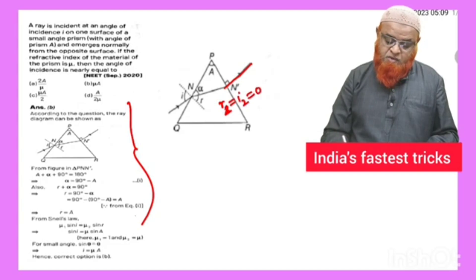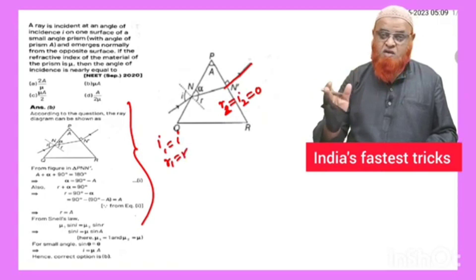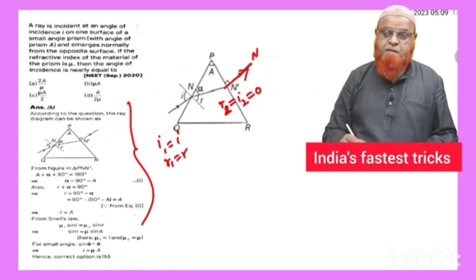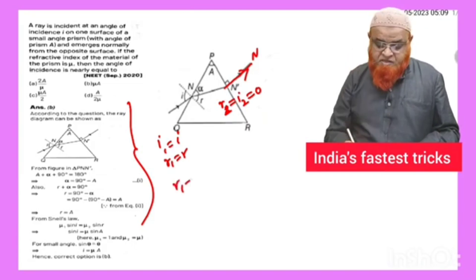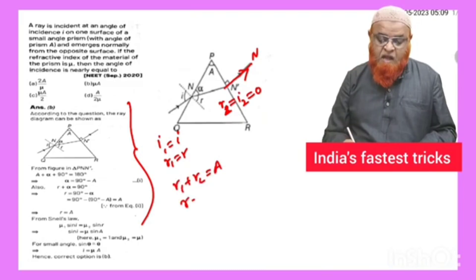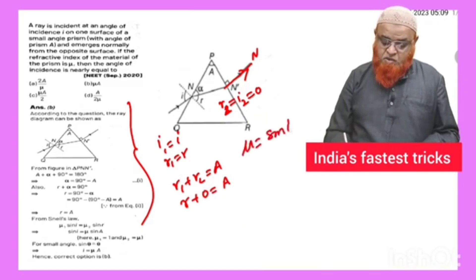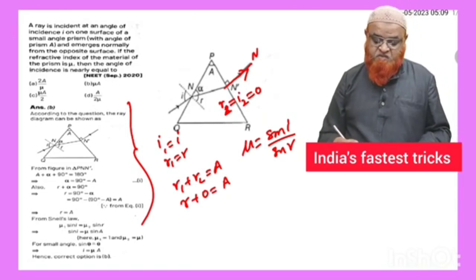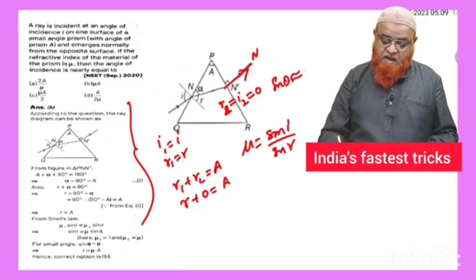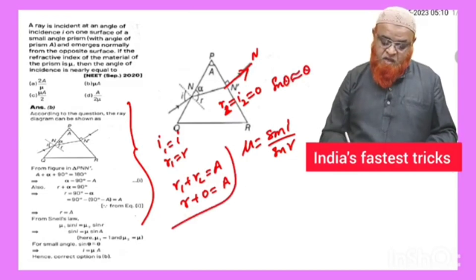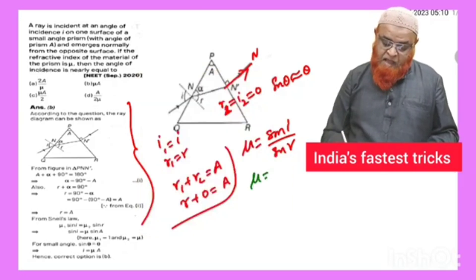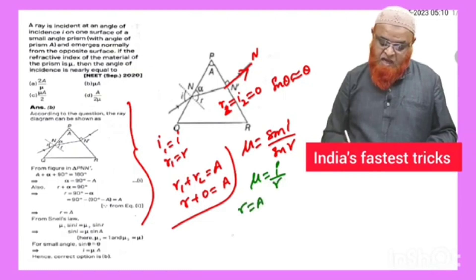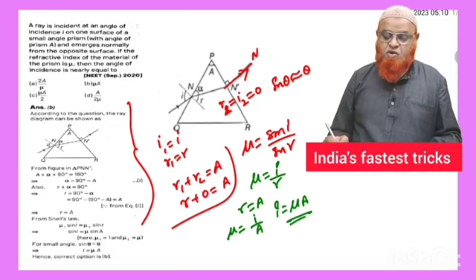R2 = I2 = 0, because the ray is going in the normal direction. So I1 = I and R1 = R, while I2 = R2 = 0. Using the prism identity R1 + R2 = A, we get R = A. Since mu = sin(I)/sin(R), and for small angles sin(θ) ≈ θ, we write mu = I/R. Since R = A, mu = I/A, therefore I = mu × A.